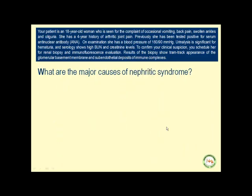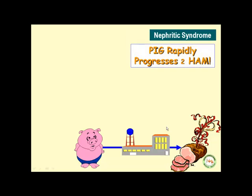Do you recall the major causes of nephritic syndrome from our lecture series in renal pathology? Remember our famous mnemonic: PEG rapidly progresses to HAM. P of PEG stands for post-streptococcal glomerulonephritis. I stands for IgA nephropathy, also known as Berger disease. G stands for Goodpasture's disease.